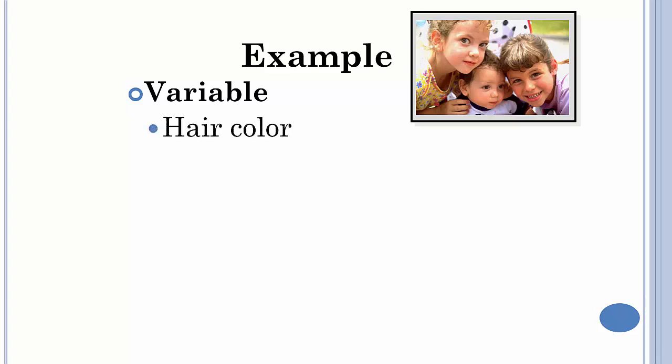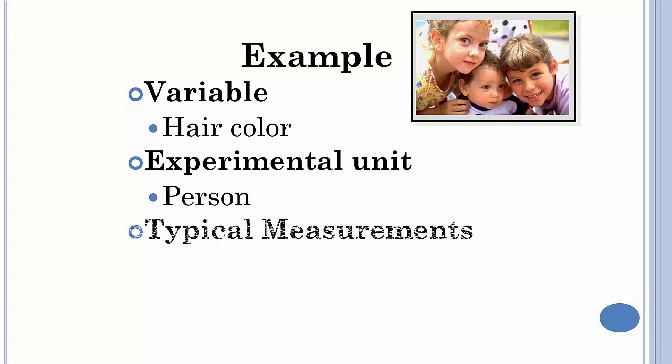Here's a simple example: your variable is hair color, the experimental unit would be a person, the typical measurements would be the different types of things you could get for hair color.